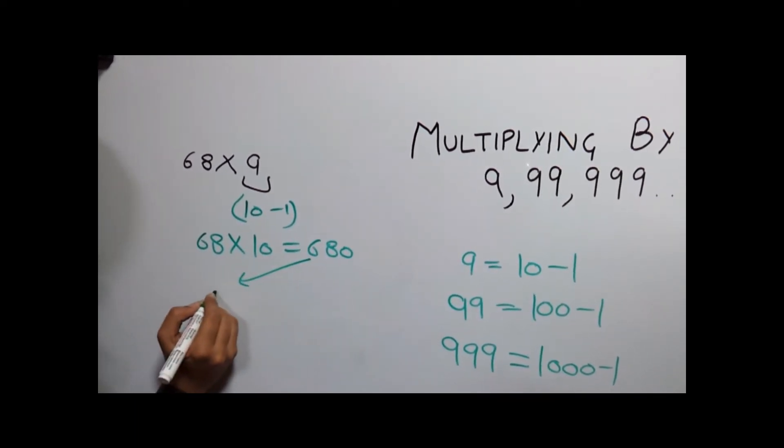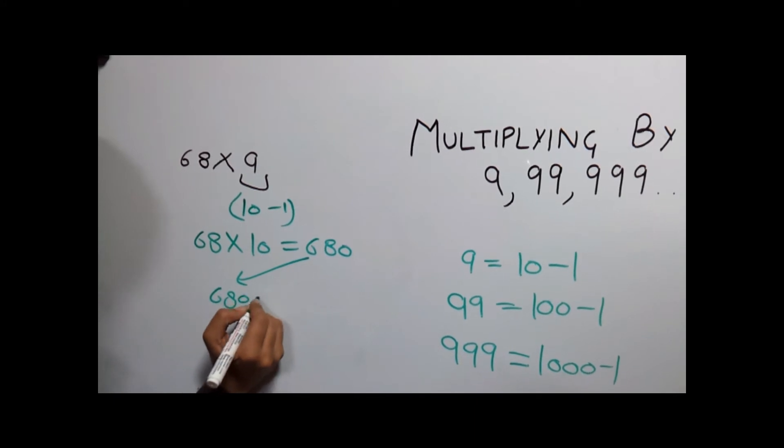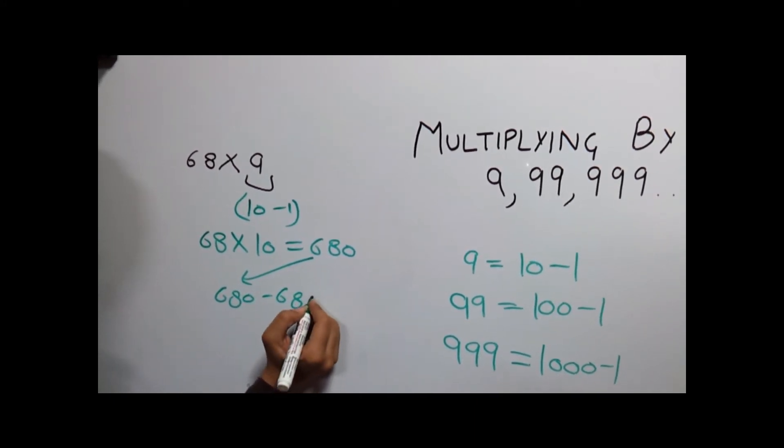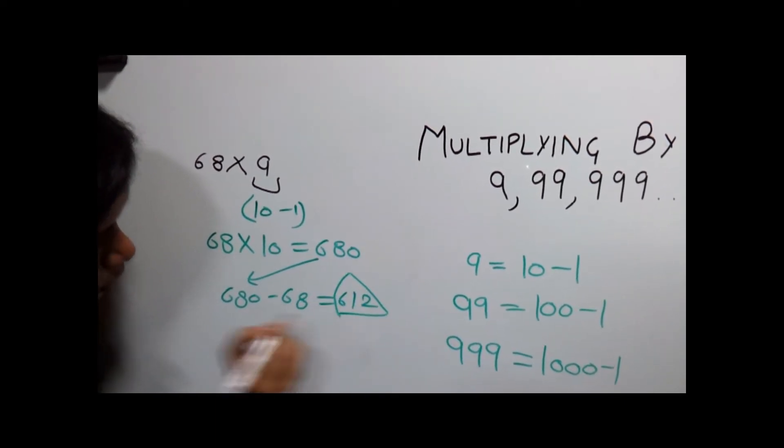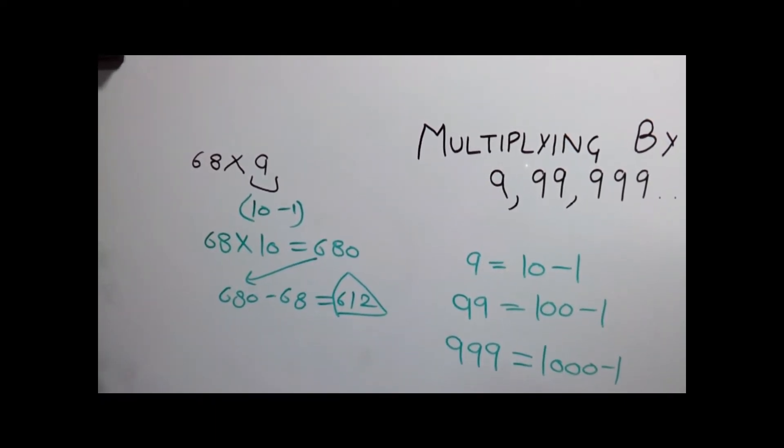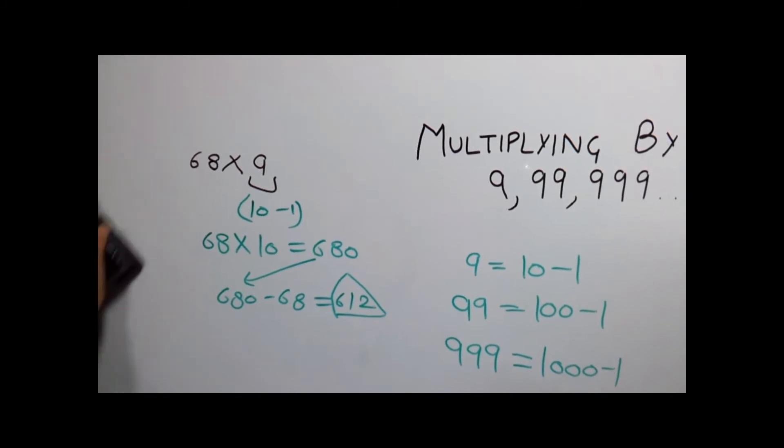Now subtracting original number from 680 gives us 612 as the answer. Let's have another example.